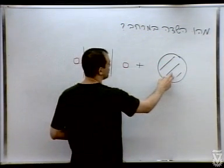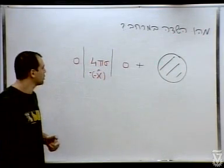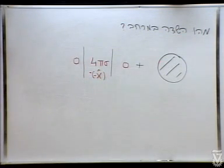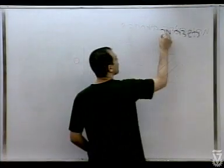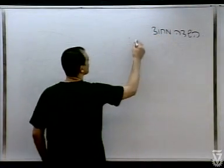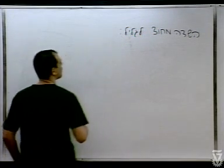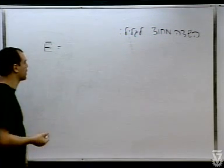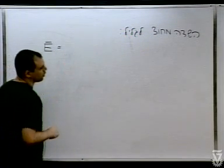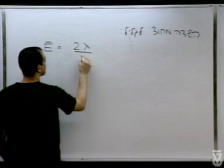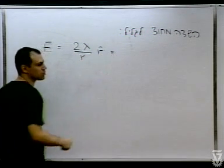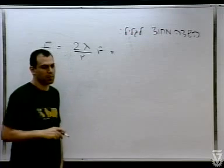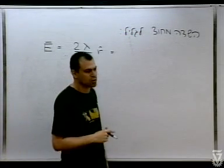ובקשר לשדה בתוך הגליל ומחוץ לגליל, זה מה שנבדוק עכשיו. מה השדה מחוץ לגליל? שדה מחוץ לגליל הוא כמו שדה של תיל. מה זה אומר? אפשר להגיד זה שני למדה חלקי R רדיאלי. ועכשיו אני צריך ביטוי ללמדה — מהי צפיפות המטען ליחידת אורך של הגליל? (Regarding the field inside and outside the cylinder: the field outside the cylinder is like a wire field. That is, 2λ/R radial. Now I need an expression for λ — what is the charge density per unit length of the cylinder?)